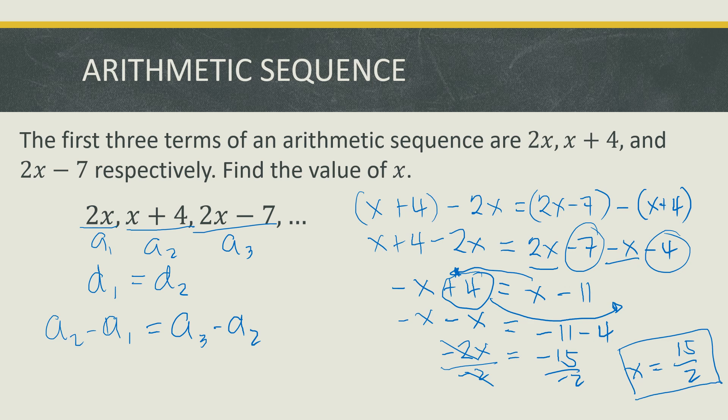Substituting x equals 15 over 2 into the terms: the first term 2x gives 2 times 15 over 2, which is 15. The second term x plus 4 gives 15 over 2 plus 4, which is 23 over 2. And the third term 2x minus 7 gives 8. These are the first three terms of the given arithmetic sequence.